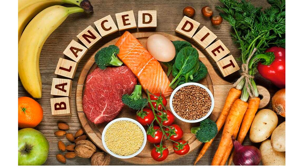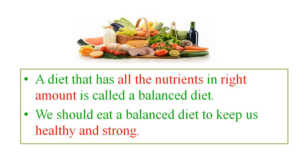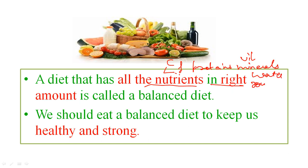Now we will discuss balanced diet. A balanced diet is a diet that contains all the nutrients in proper amounts — carbohydrates, fats, proteins, vitamins, minerals, water, and roughage. If all seven nutrients are present in proper amounts, it is called a balanced diet. We should eat this diet to keep us healthy and strong.